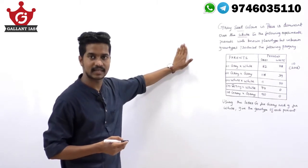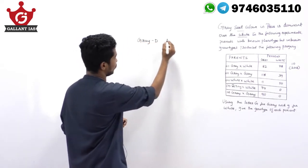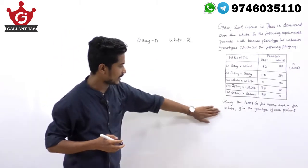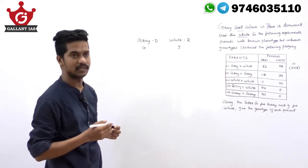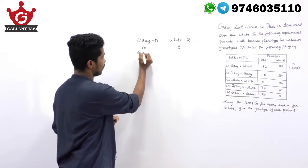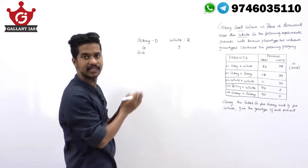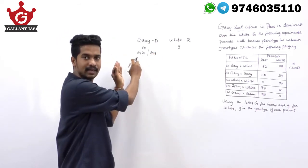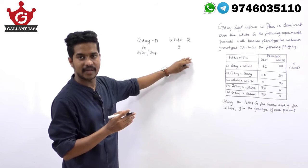The key terms are: gray is dominant over white. The letter capital G denotes gray and small g denotes white. The possibilities of gray are in homozygous condition (capital G capital G) or in heterozygous condition (capital G small g). Gray is dominant so it can be seen either in homozygous or heterozygous condition. White is recessive, so the only possibility of white is small g small g.